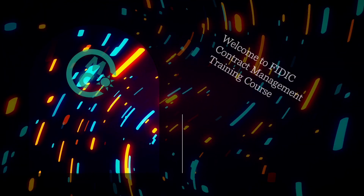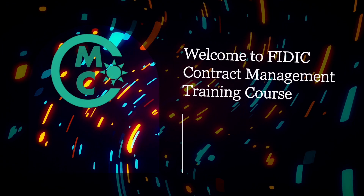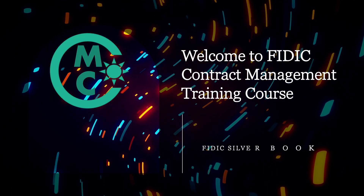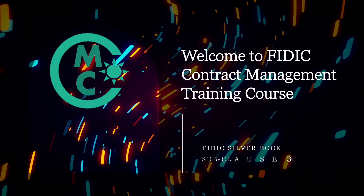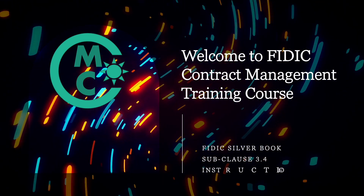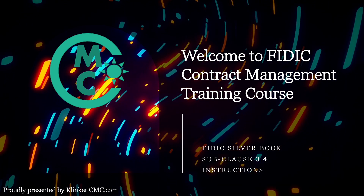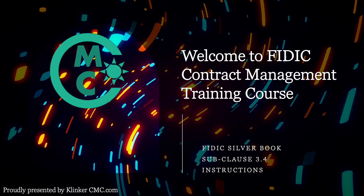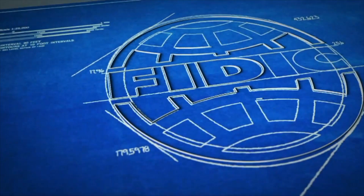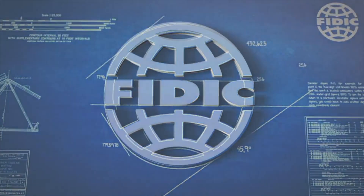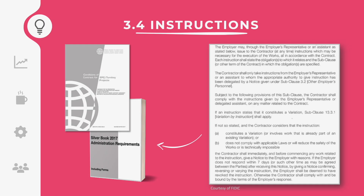Welcome to the FIDIC Contract Management channel. In this video, we will explain how the employer can issue instructions for a FIDIC Silver Book EPC contract. This training course is proudly presented by CleanCareCMC.com. The FIDIC Silver Book contract form is used for engineering, procurement, and construction contracts which can be on a turnkey basis with a fixed lump sum price.